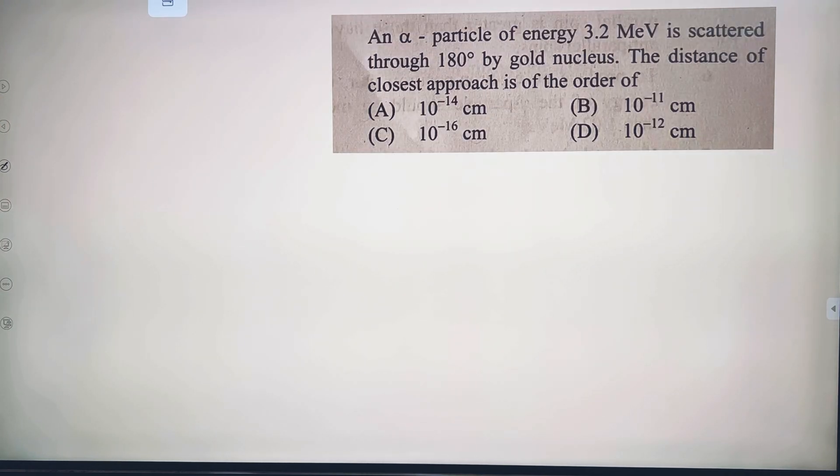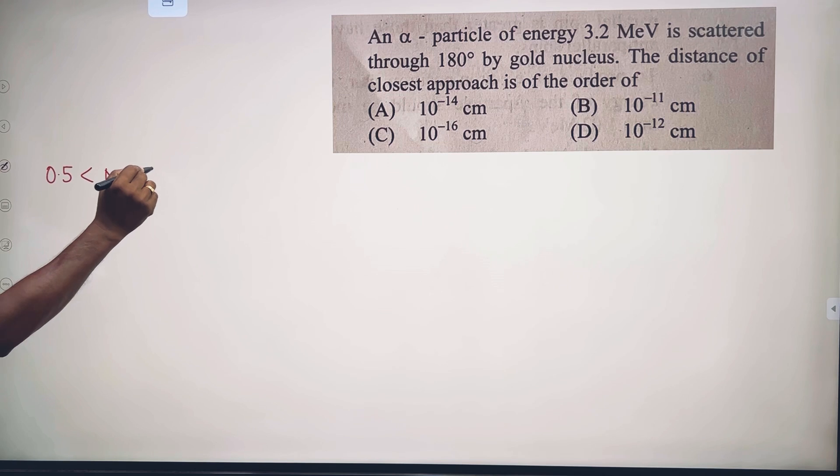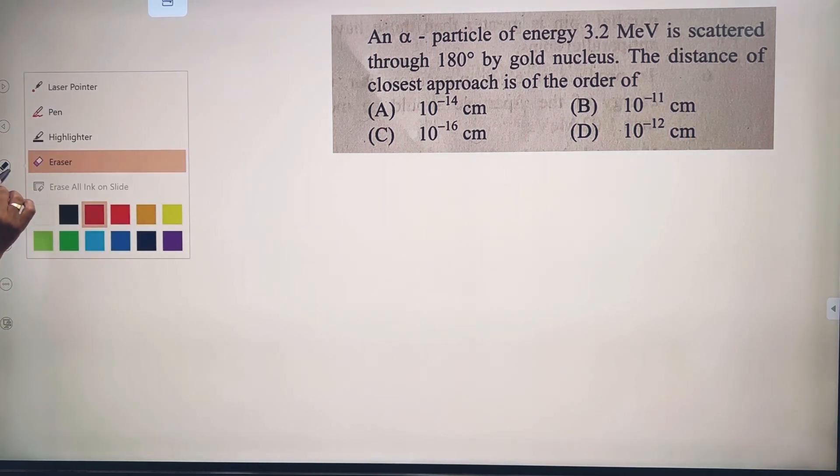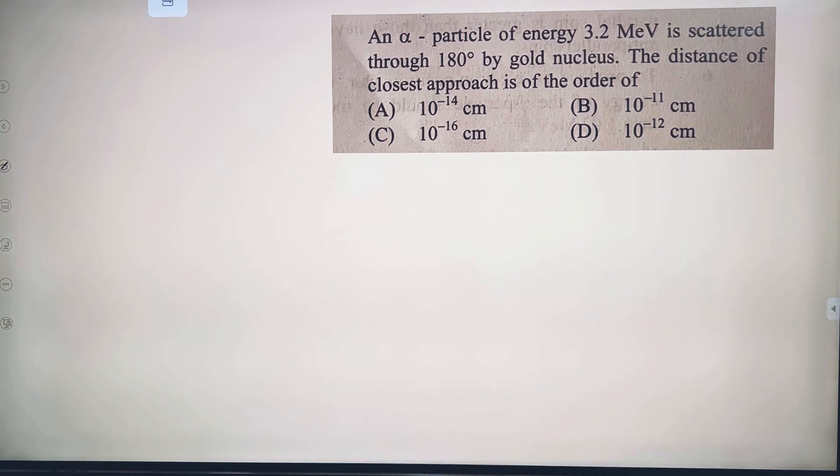Next problem: An alpha particle of energy 3.2 MeV is scattered through 180 degrees by gold nucleus. The distance of closest approach is of the order of what? We need to find this using the formula from electrostatics.